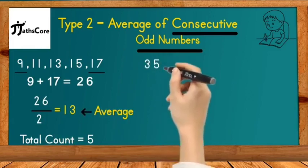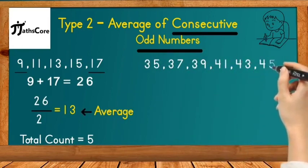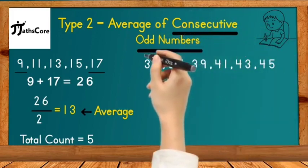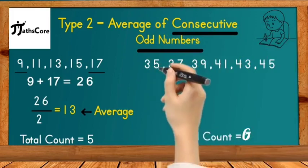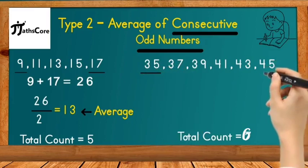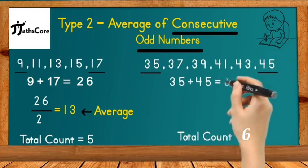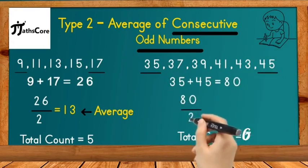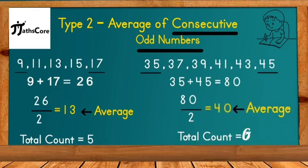Second example is 35, 37, 39, 41, 43, 45. In this example all numbers are consecutive odd numbers and exactly 7 numbers are given. According to the Vedic math concept, we need to add first and last number together. So first number is 35 and last number is 45. 35 plus 45 is equal to 80, and 80 divided by 2 is equal to 40, which is the average of all these consecutive odd numbers.